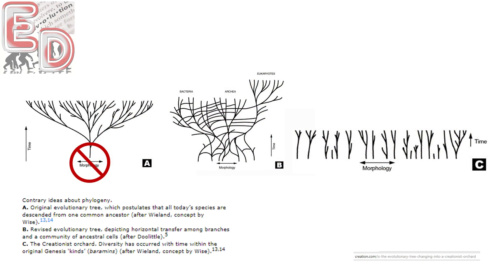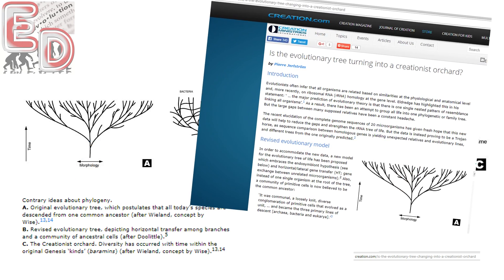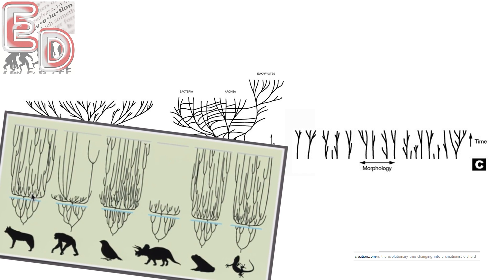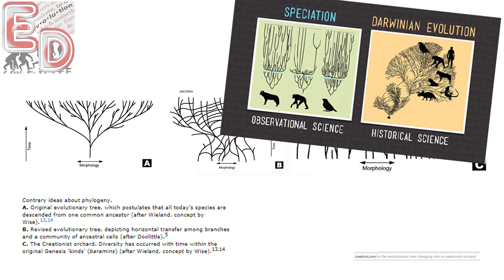The evolutionary tree of life, now that actual observational data is coming in, is starting to look more and more like the creationist orchard. The orchard postulates that distinct kinds of animals were created, which could then adapt to their environment and lead to new species within the kind. But there were boundaries to this adaptation, which is exactly what we observe in the laboratory.